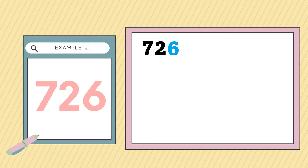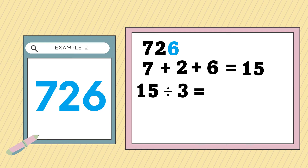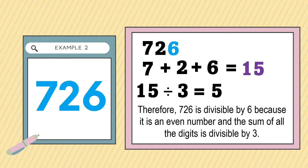We're going to add all the digits: 7 plus 2 plus 6. 7 plus 2 is equal to 9, plus 6 is equal to 15. Is 15 divisible by 3? 15 divided by 3 is equal to 5. Therefore, 726 is divisible by 6 because it is an even number, divisible by 2, and the sum of all the digits is divisible by 3.